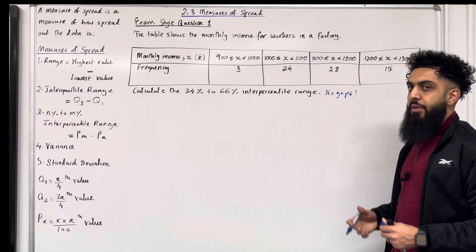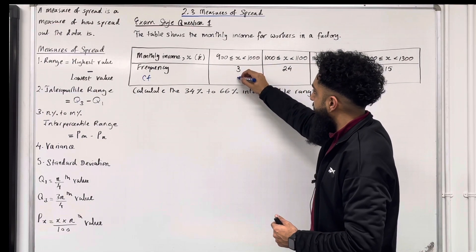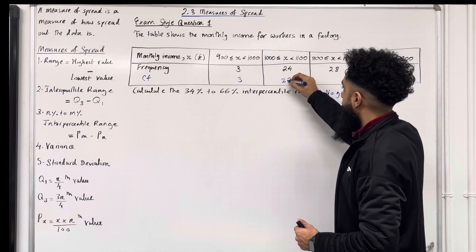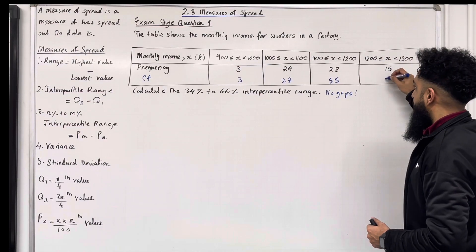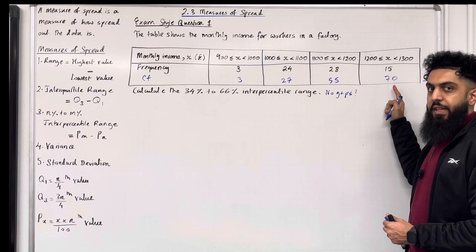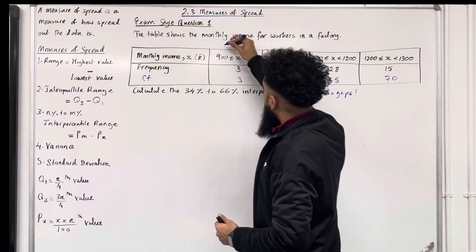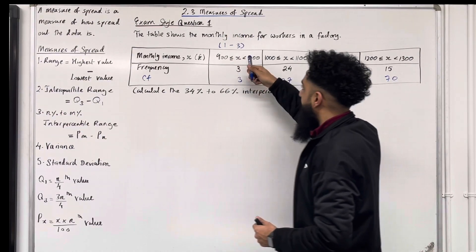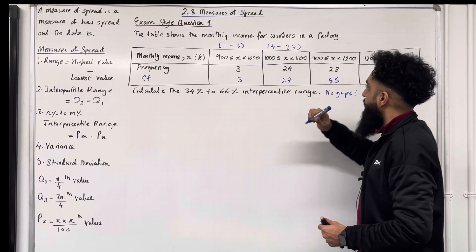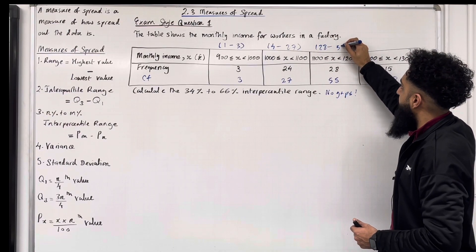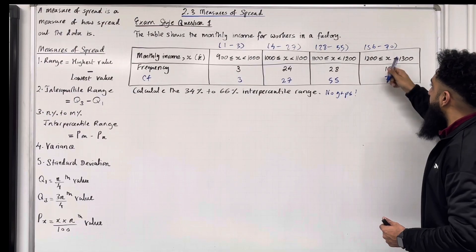Now I'm going to label the cumulative frequencies, shorthand CF. The first cumulative frequency is 3. The second is 3 plus 24, which is 27. The third is 27 plus 28, which is 55. And the last one is 55 plus 15, which is 70 — the total frequency, the sample size. So the first to third data values fall in the first class interval, the 4th to 27th fall in the second, the 28th to 55th in the third, and the 56th to 70th in the final class interval.